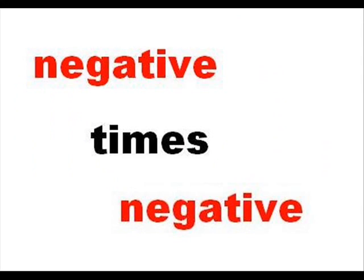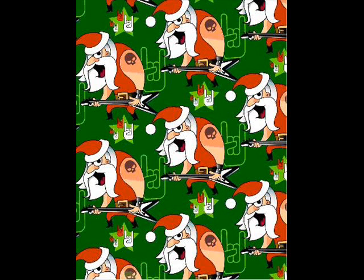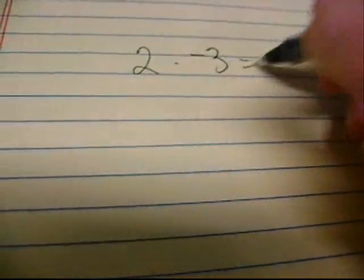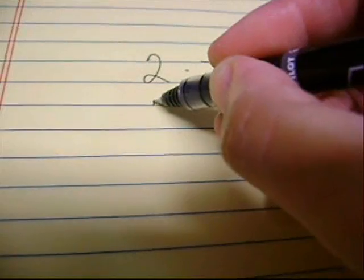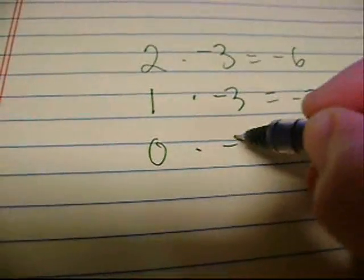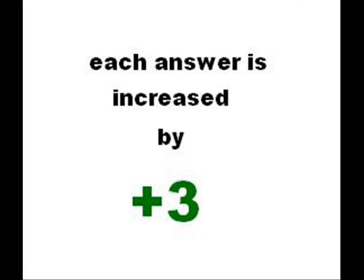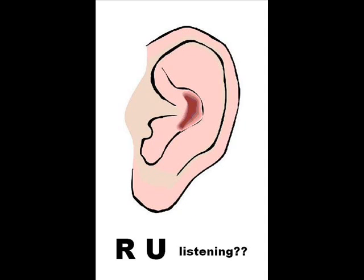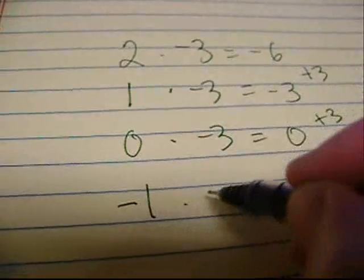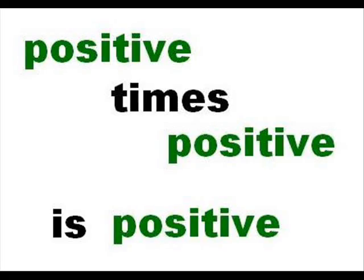Now a negative times a negative is often — this seems illegit. But if you just submit a list, the pattern goes something like this: two times negative three is negative six, one times negative three is negative three, zero times negative three is zero. Each answer is increased by three. Are you listening to me? Negative one times negative three is positive three.